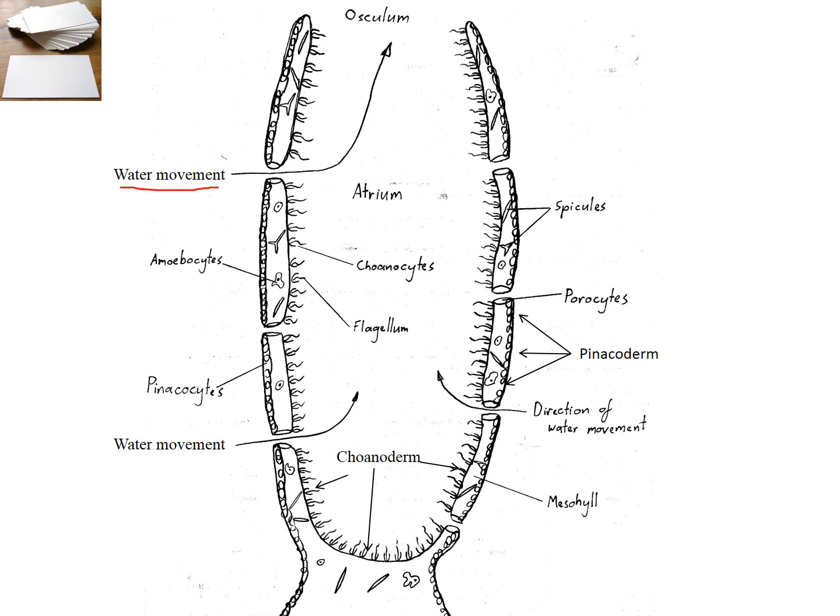Water moves through a sponge, and then sponges filter out food particles in the form of phytoplankton, bacteria, and other things that are suspended in the water column. And in order to do that, they need to have water movement through the sponge. So that's what this is. The water comes in to the sponge and then goes out.